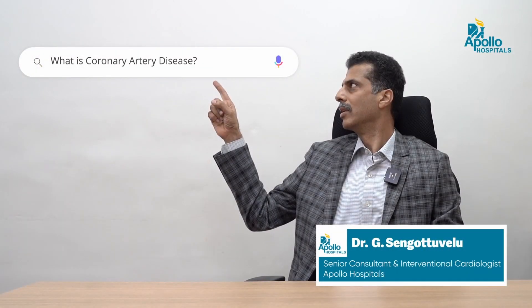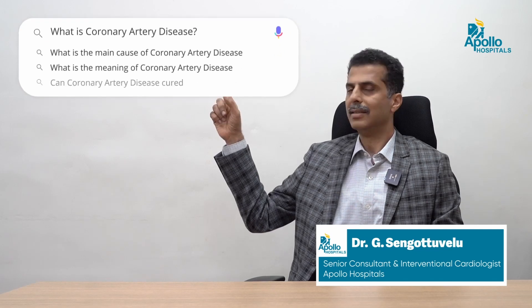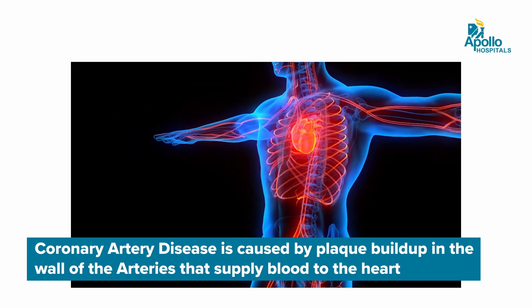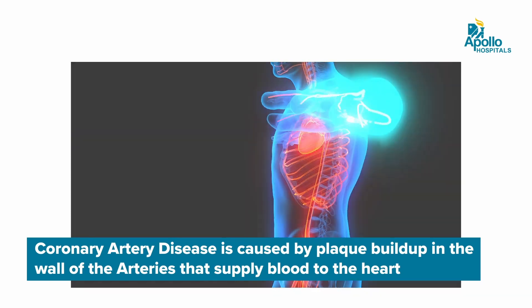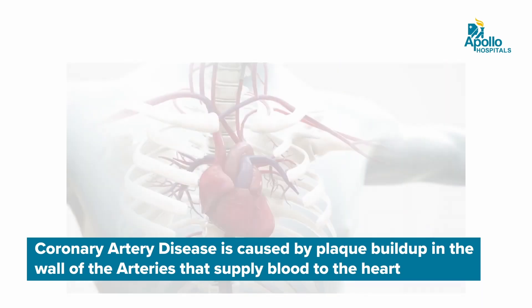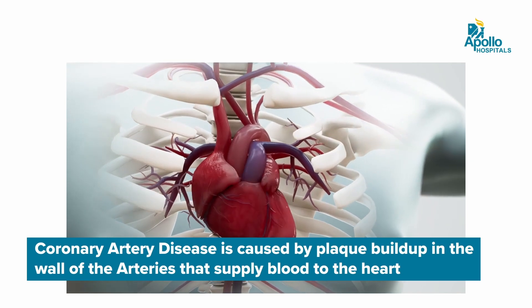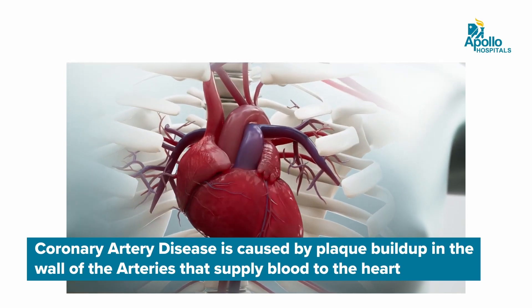So, what is CAD, Coronary Artery Disease? Basically, the heart has three blood vessels. Those blood vessels are called coronary arteries. On the left, we have two major coronary arteries called the left coronary artery. On the right, we have another coronary artery called the right coronary artery. So, if the coronary arteries are diseased, then we call it coronary artery disease.